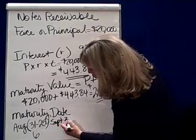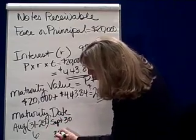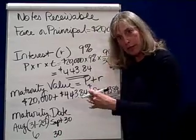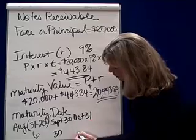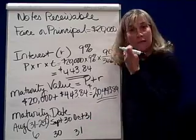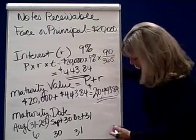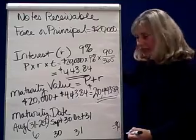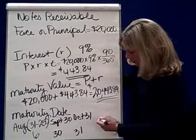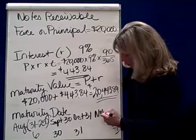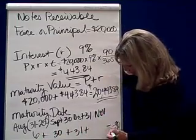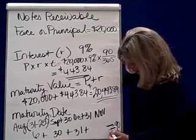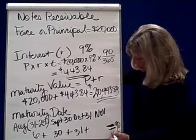September has 30 days, so we get 30 days in September. October has 31 days, so we get 31 days. What's our target? We're trying to reach 90 days total. So for November, we take whatever it takes to get us to 90 days.